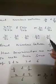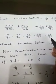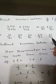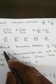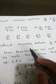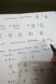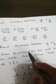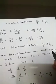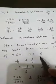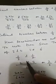So the numbers between 20 by 70 and 50 by 70 are 21 by 70, 22 by 70, 23 by 70, 24 by 70, and 25 by 70. This is an easier method than the previous one. Now we will do some more questions — find rational numbers between 1 by 3 and 1 by 2.